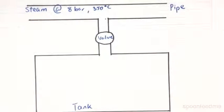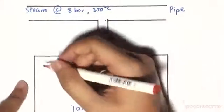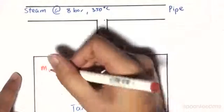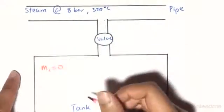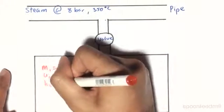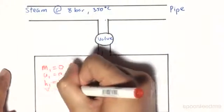And so essentially over here what's going to be the case is that the initial state within the tank, which is M1, is going to be 0. And since it's not going to have anything in it, U1 is going to be 0, H1 is going to be 0, and V1 is going to be 0.